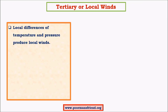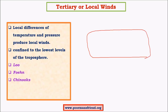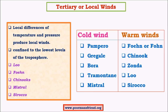Now let us see about tertiary or local winds. These are caused mainly due to temperature and pressure differences in very small areas, so they are very localized and confined to only the lower levels of the troposphere. Monsoon winds cover not just the surface of the earth but also move in the upper levels of the troposphere, a few kilometers above the earth's surface. Local winds are not similar — they are only confined to the lower levels of the troposphere.